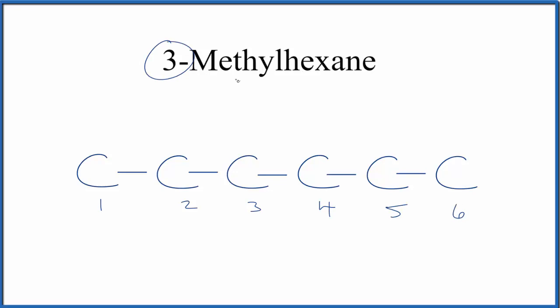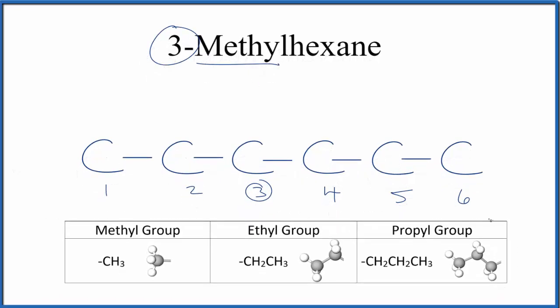The 3 here tells us that we'll have a methyl group on the third carbon. A methyl group, that's just CH3. We're just adding one carbon onto this carbon here. That looks like this.